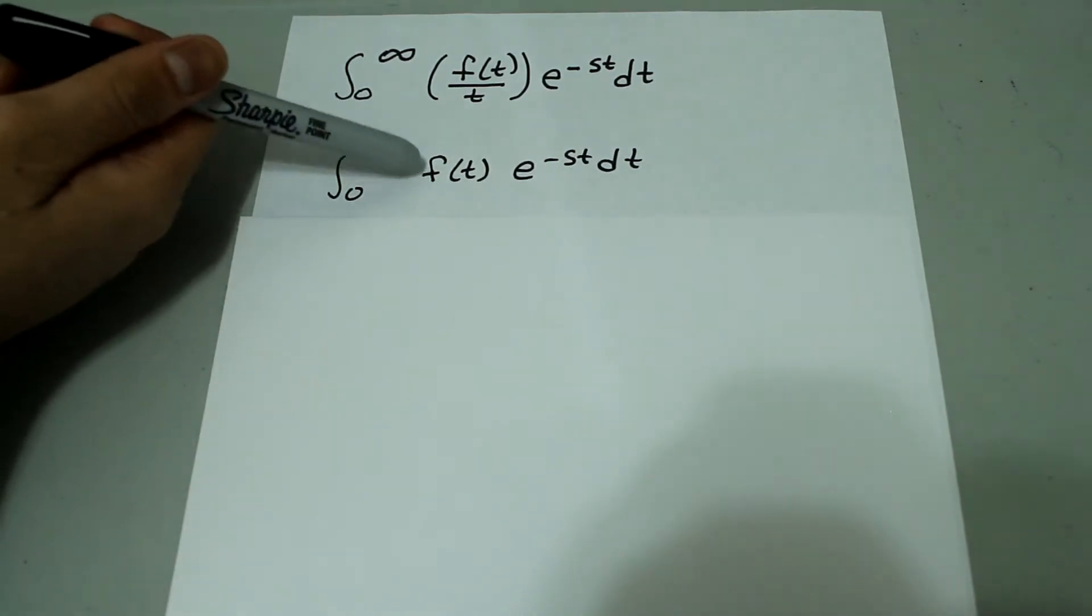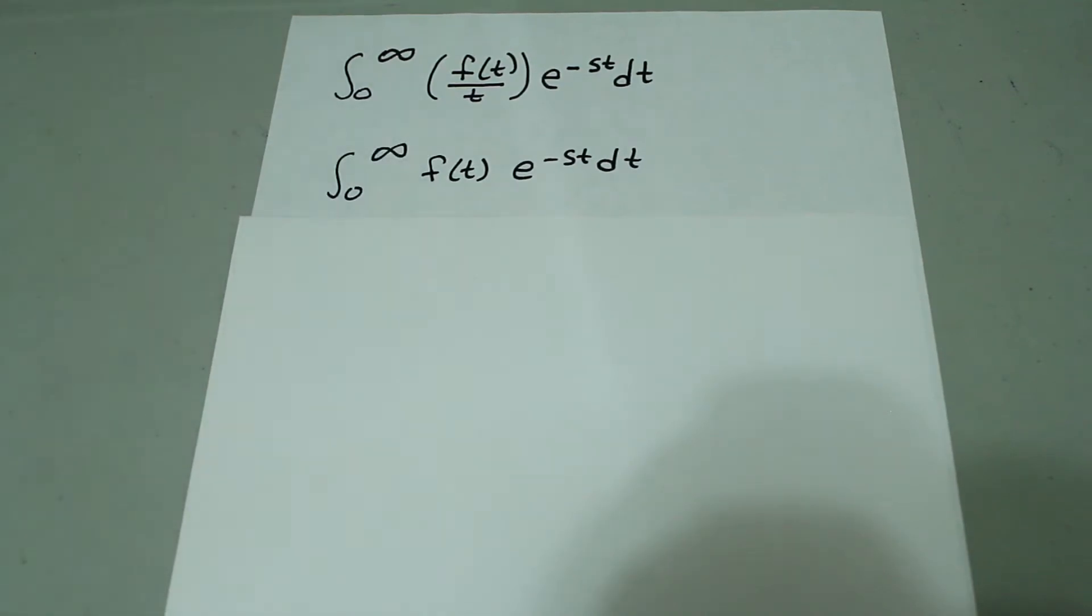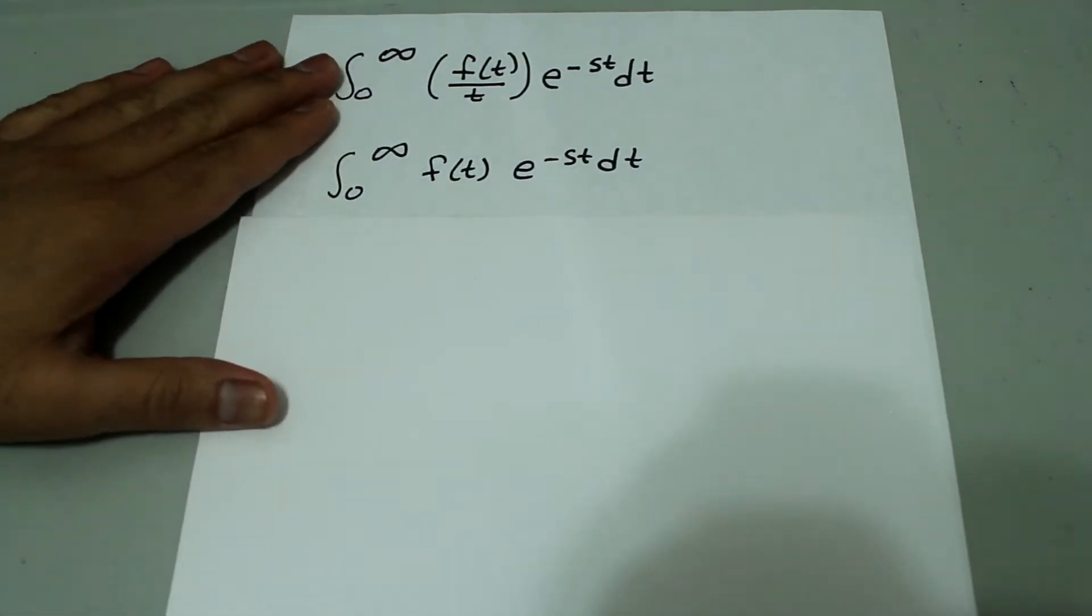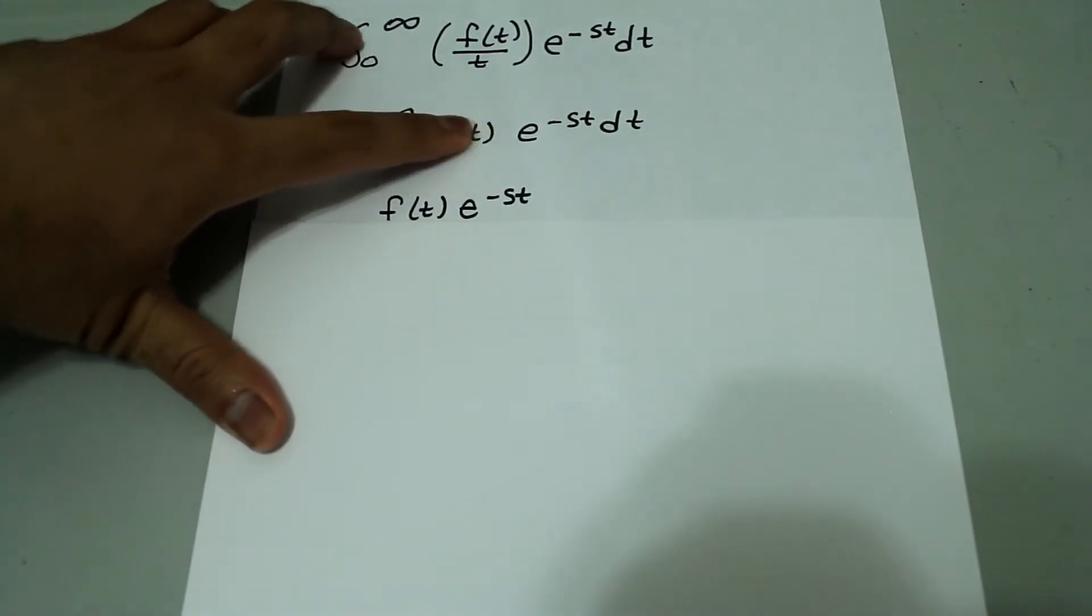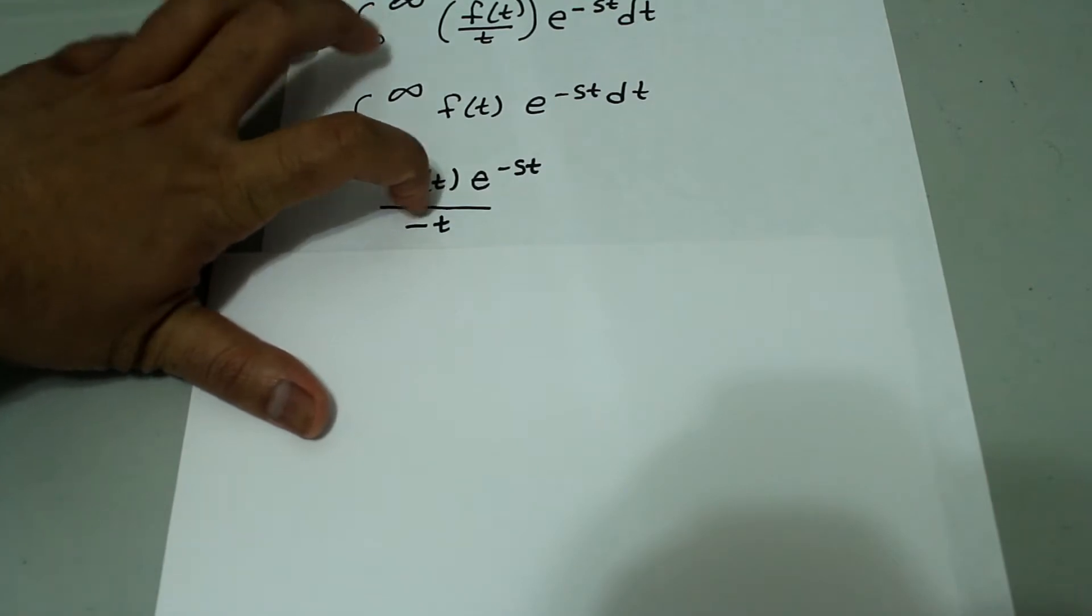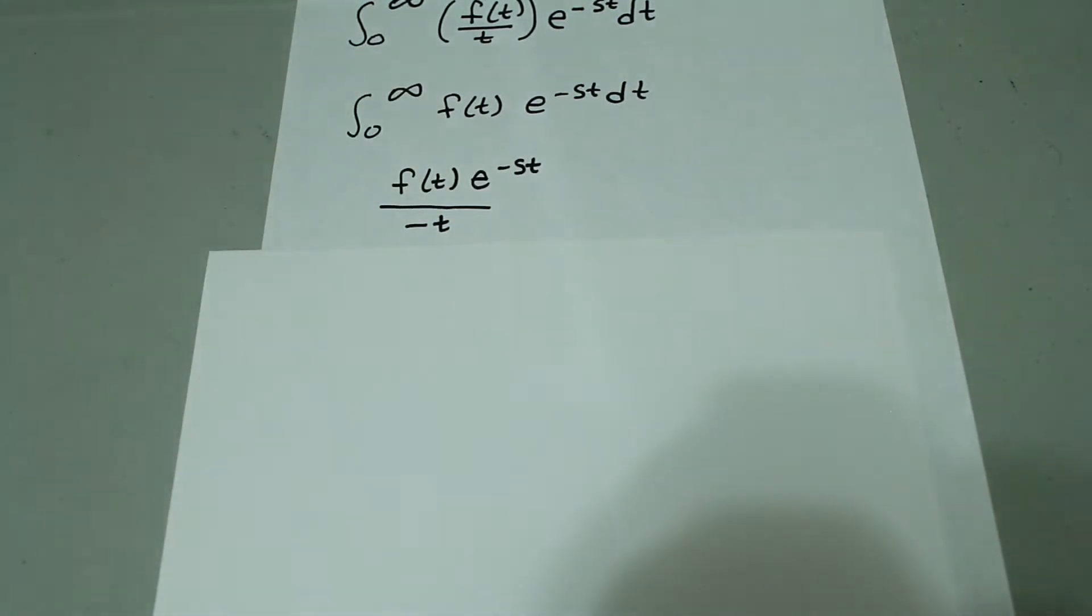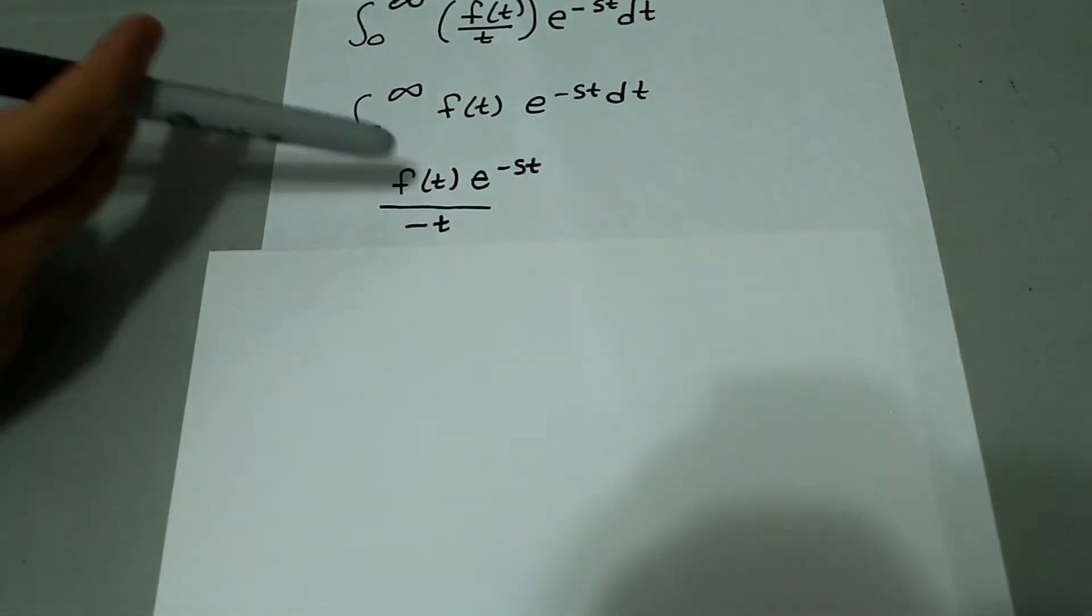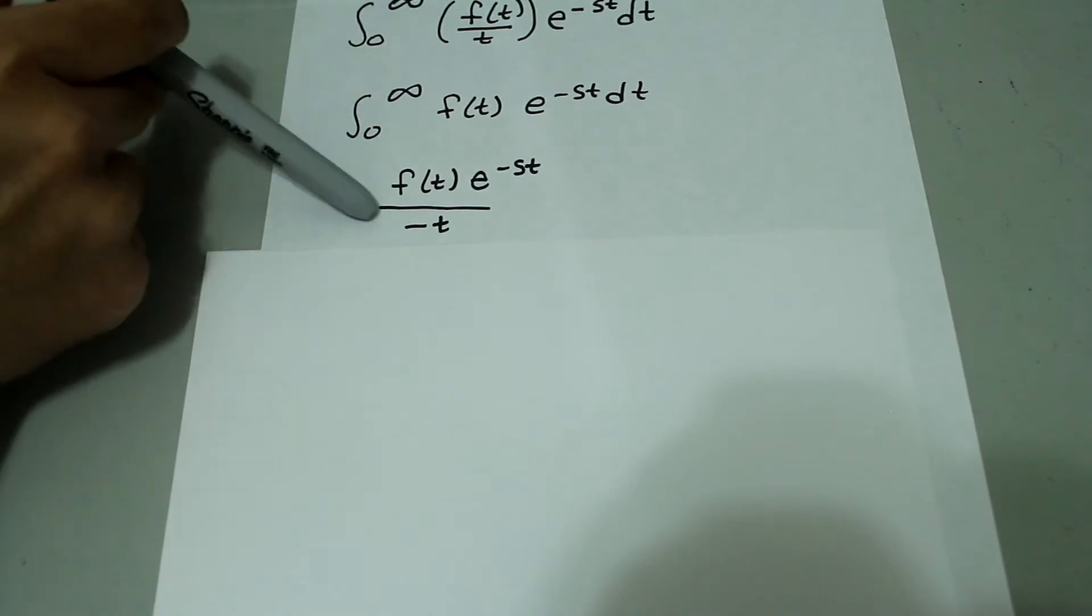So, how can we get this to look like this? Well, if we integrated this with respect to s, then f of t would be treated like a constant since it's a pure function of t, not s. Then we'd have e to the negative st and we'd have to divide by negative t. That would be if we integrated this with respect to s.